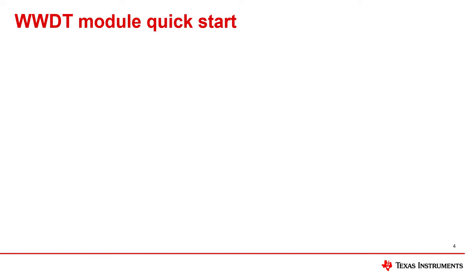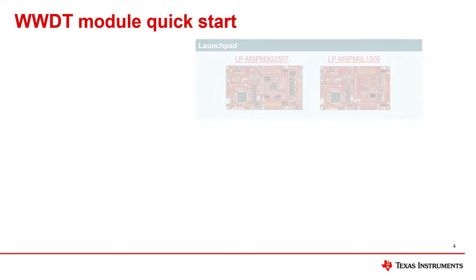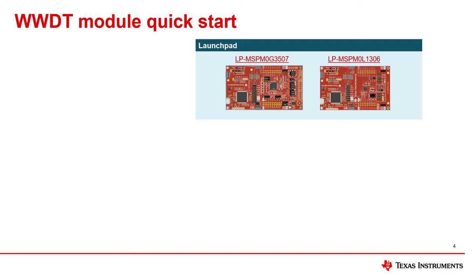Now that we have covered some of the characteristics of the windowed watchdog timer, we will talk about how to use it. First, you need an MSP M0 evaluation board. These can easily be purchased on ti.com.